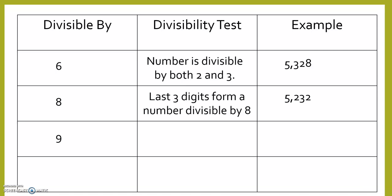9. Sum of the digits is divisible by 9. 4,923. 4 plus 9 is 13, plus 2 is 15, plus 3 is 18. 18 is divisible by 9, so 4,923 is divisible by 9.